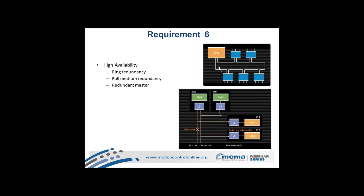There are three forms of high availability in Powerlink. The first is ring redundancy: connect the last component in a daisy chain back to the main controller to form a ring. When the controller puts out a poll request, it listens for it on the other side. If it doesn't come back, the controller knows there's a broken cable and starts communicating on both sides. With only one broken cable, the system can still operate while notifying service.